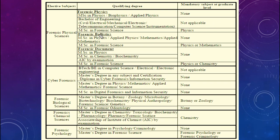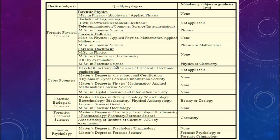For forensic ballistics, you must have an MSc in physics, applied physics, mathematics, applied mathematics, or MSc in forensic science — with graduation mandatory subject being physics or mathematics. For forensic document examination, an MSc in physics, chemistry, biochemistry, or AIC (Associationship of Institute of Chemists by examination) qualifies, with no mandatory graduation subject. If you have an MSc in forensic science, your graduation subject must be physics or chemistry.